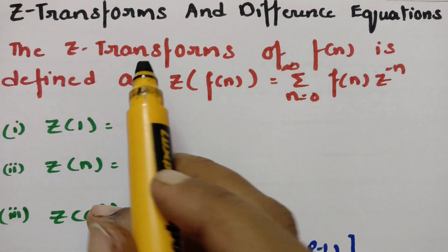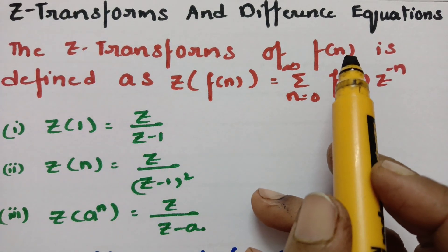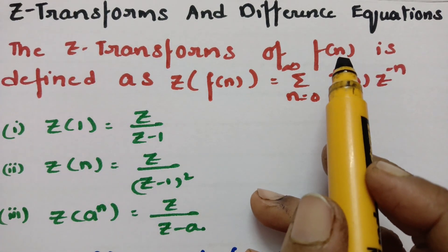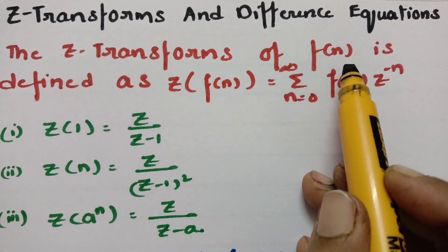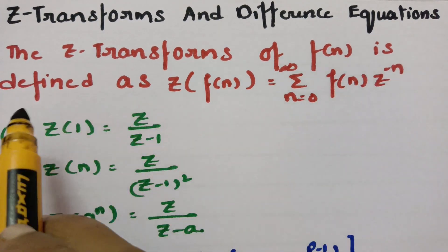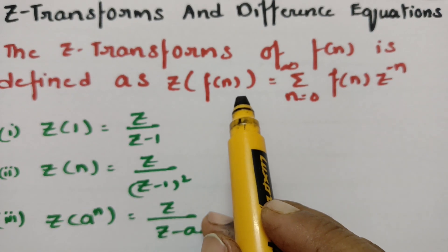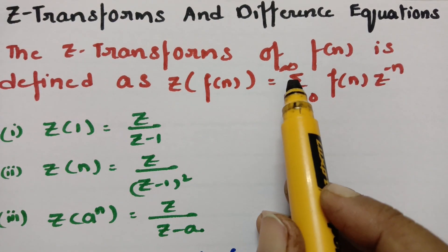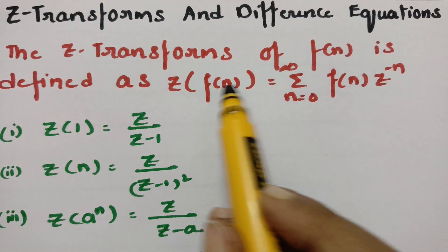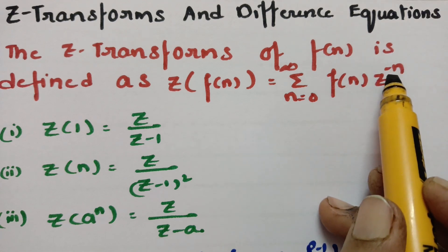Today's video is on Z transforms and difference equations. The Z transform of a function f of n is defined as Z of f of n is equal to sigma, n is equal to 0 to infinity, f of n into z to the power minus n.